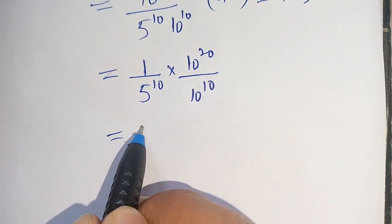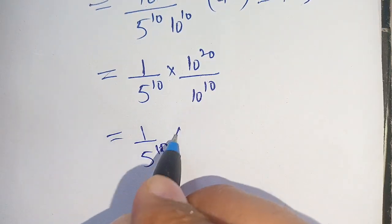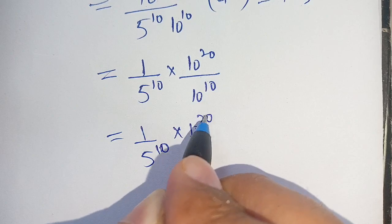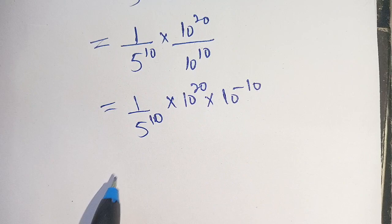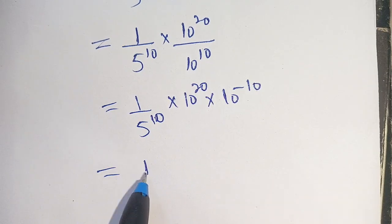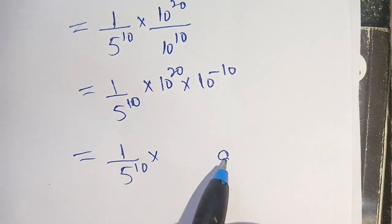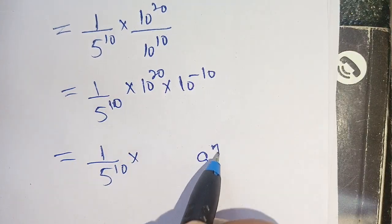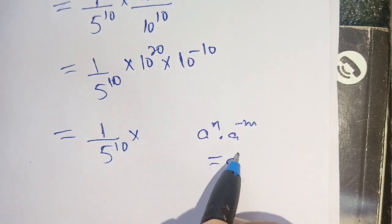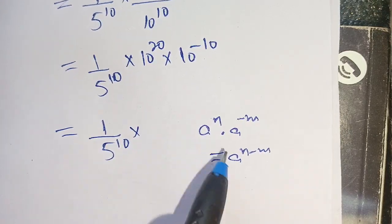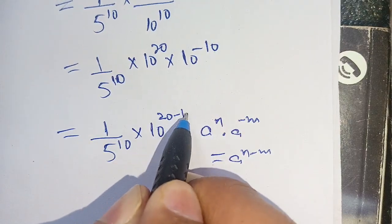We can write it as 1 divided by 5 raised to power 10, times 10 raised to power 20 times 10 raised to power minus 10. We know that a power n times a power minus m is equal to a raised to power n minus m. By this identity, we can write it as 10 raised to power 20 minus 10.